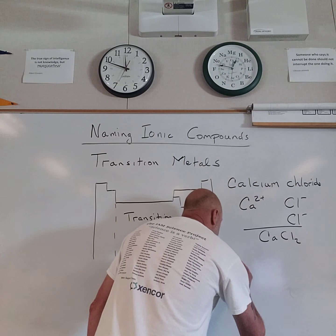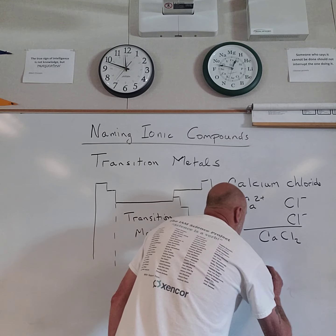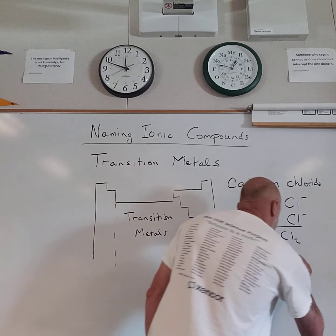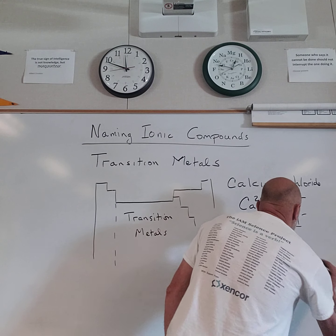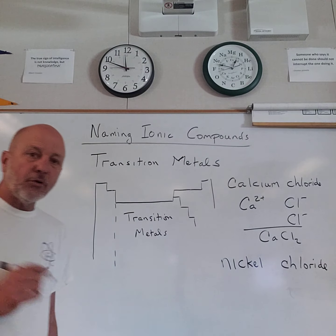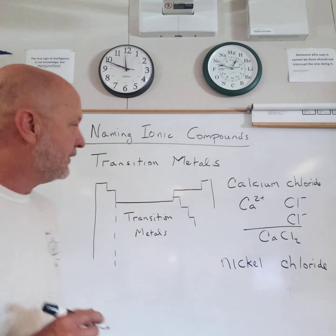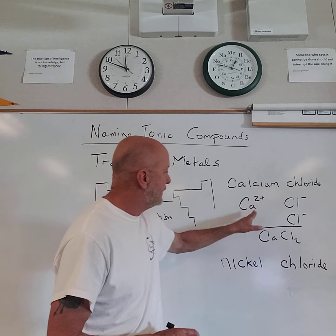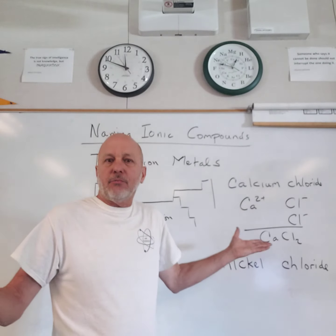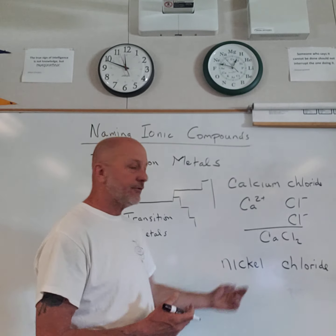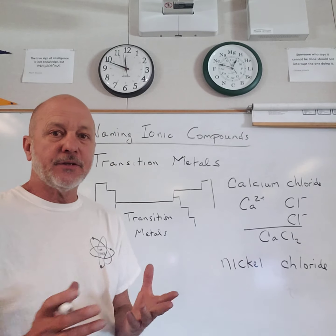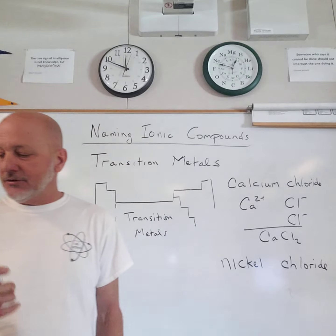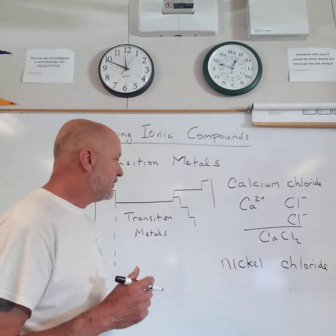But what about a compound of nickel and chloride? I'm leaving a little space because we're going to have to add something. There's more than one compound of nickel and chloride — nickel can do different things. It's in the transition metal section. So I can't just say nickel is some fixed charge. What is the positive charge of nickel? It can do different things — most commonly it's either two-plus or three-plus, but we don't know without more information.